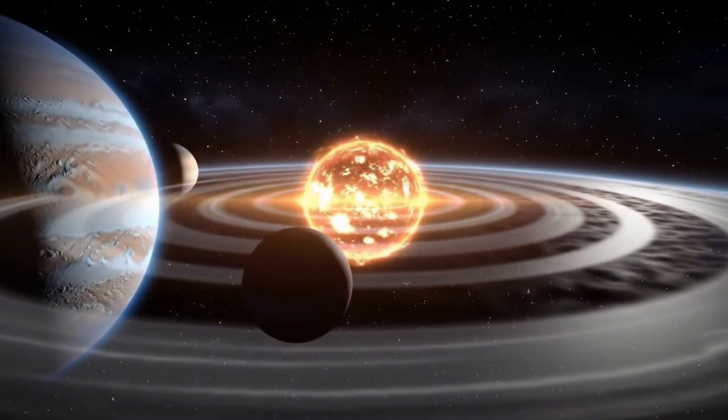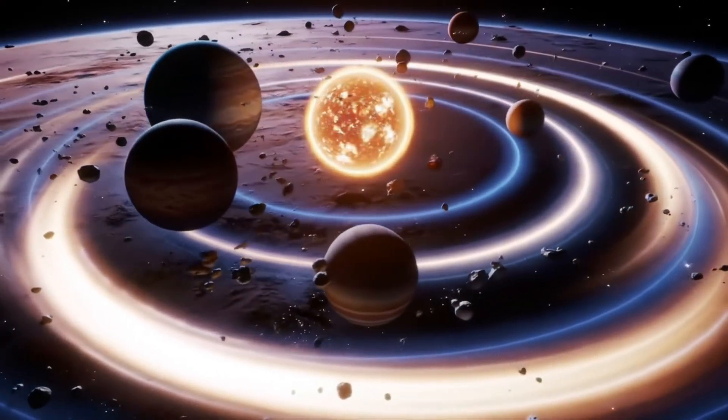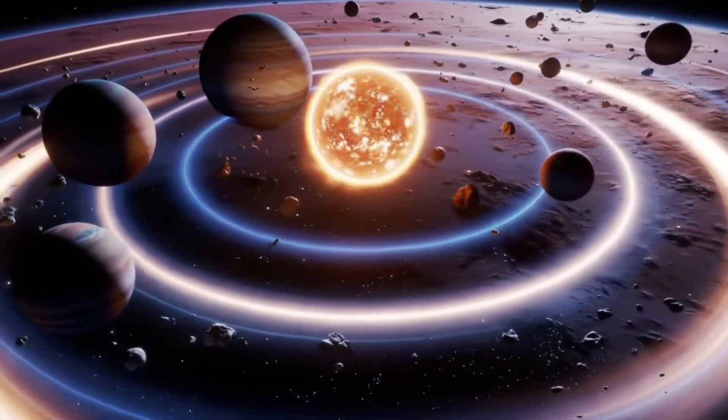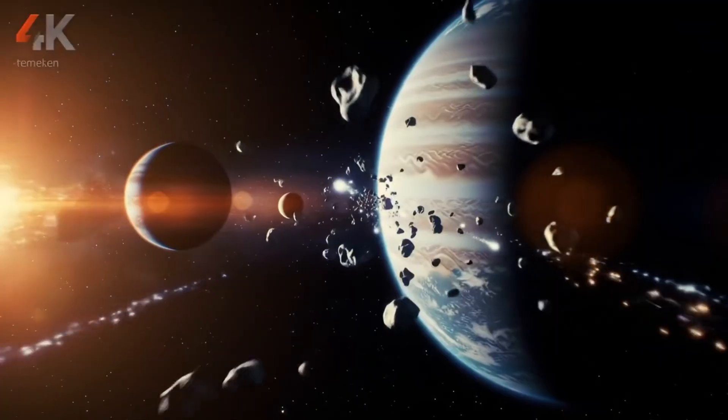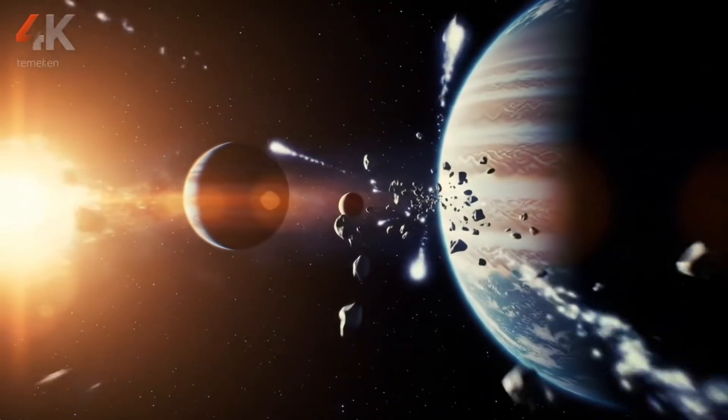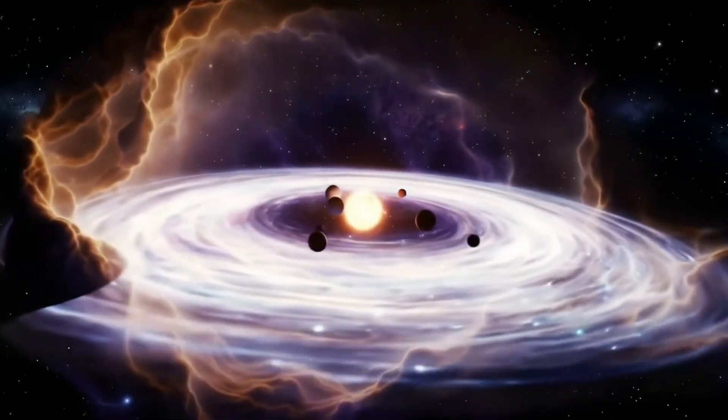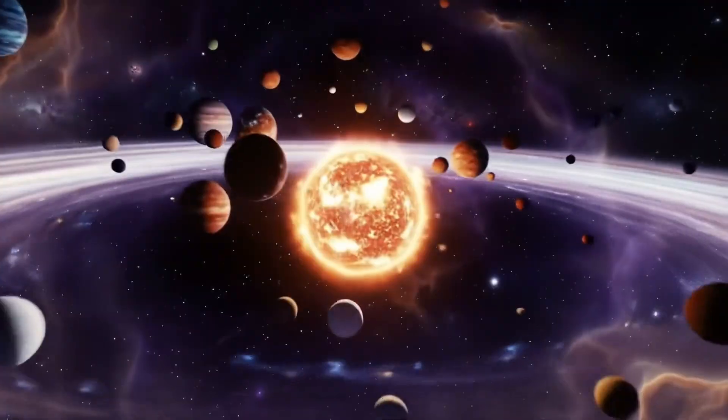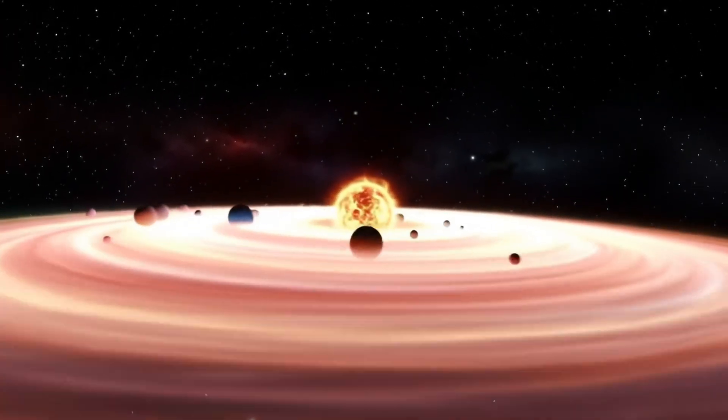Our solar system is like a cosmic pancake, a mostly flat disk where the sun sits in the middle, and the planets, asteroids, and comets orbit around it. This flat plane called the ecliptic is where most of the action happens. About 4.6 billion years ago, a giant cloud of gas and dust collapsed to form the sun and planets. As it spun, it flattened out like pizza dough, creating this disk.